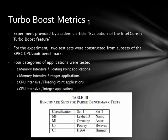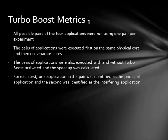Now we'll look at some Turbo Boost metrics from the experiment in the academic article 'Evaluation of the Intel Core i7 Turbo Boost Feature.' For this experiment, two test sets were constructed from subsets of the SPEC CPU 2006 benchmarks. Four categories of applications were tested: two memory-intensive floating-point applications, two memory-intensive integer applications, two CPU-intensive floating-point applications, and two CPU-intensive integer applications. All possible pairs of the four applications were run using one pair per experiment. The pairs were executed first on the same physical core and then on separate cores, both with and without Turbo Boost activated. One application in each pair was identified as the principal application and the second as the interfering application.